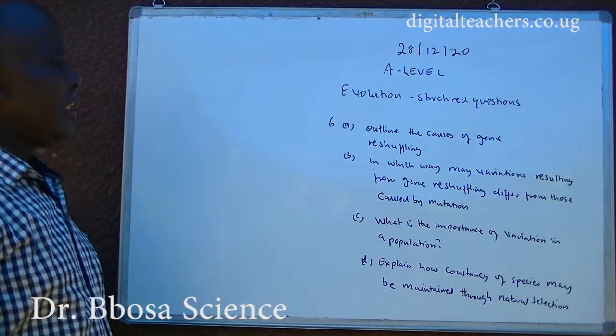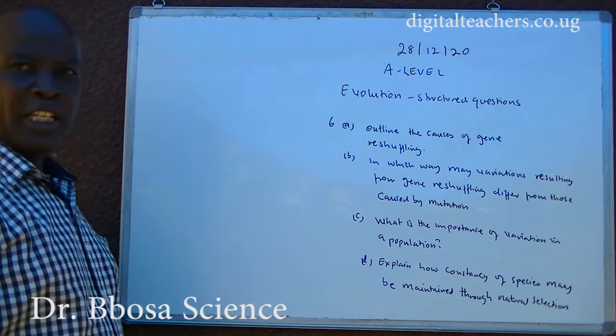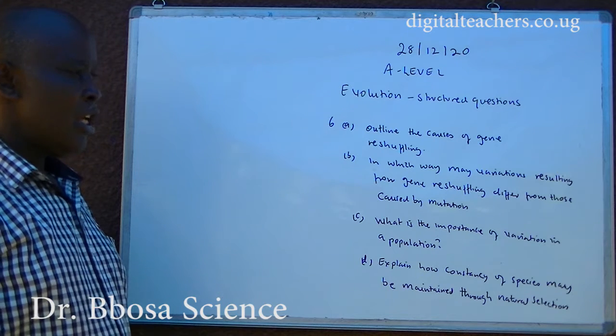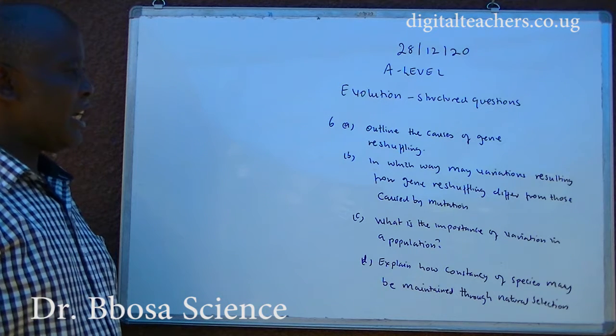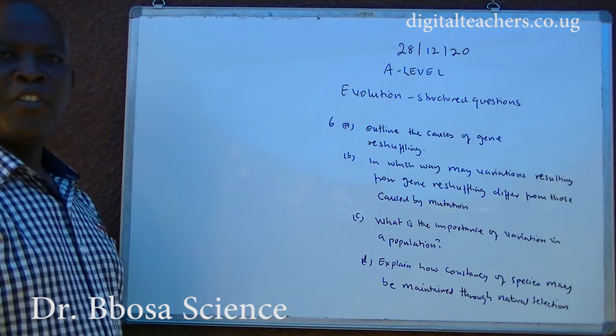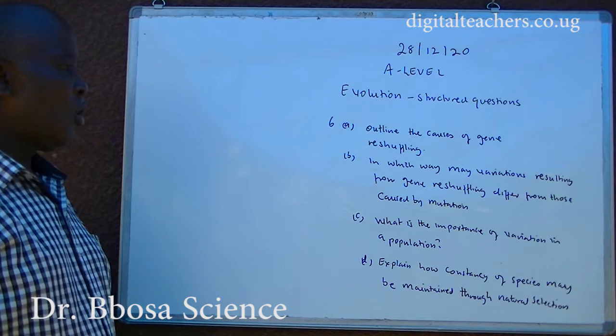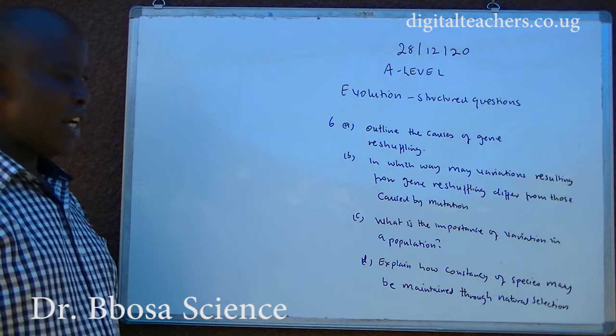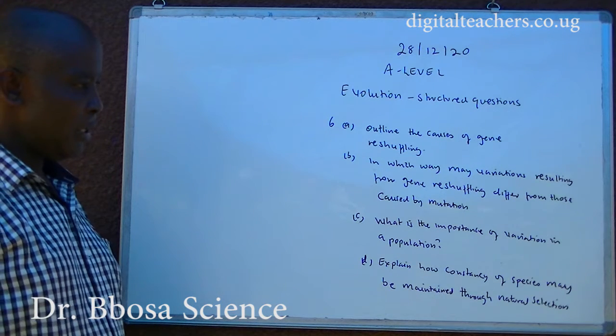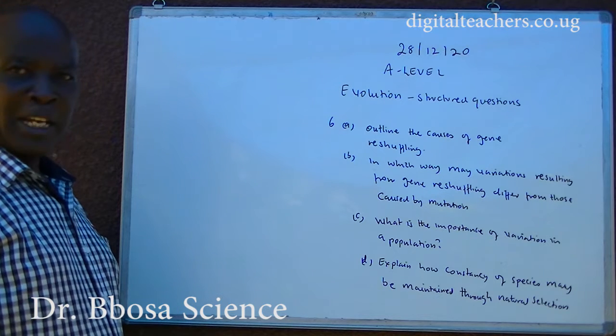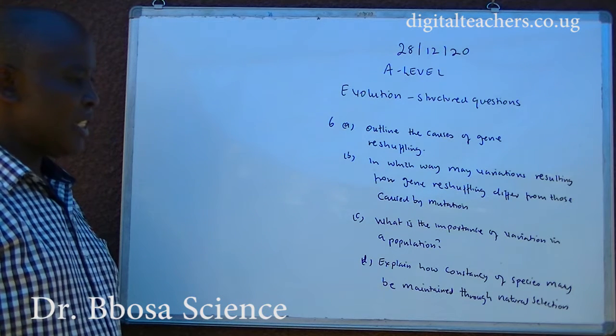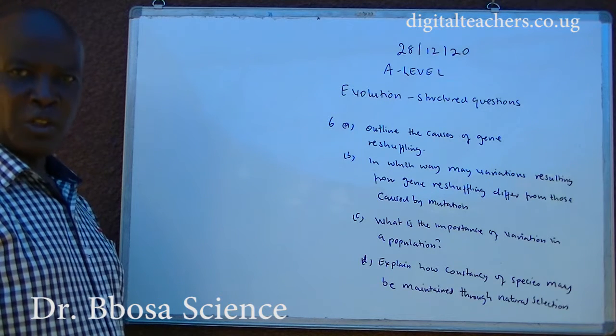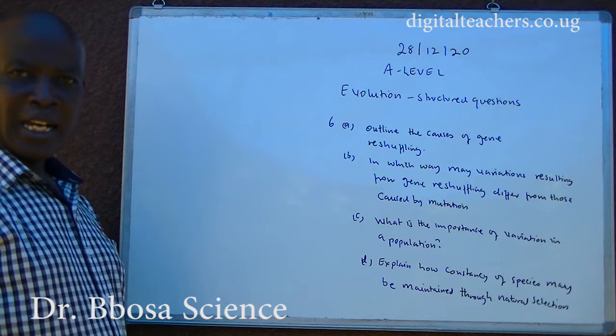Number six A. Outline the causes of gene reshuffling. B. In which way may variations resulting from gene reshuffling differ from those caused by mutation? C. What is the importance of variation in a population? D. Explain how constancy of species may be maintained through natural selection. You can pause and answer.